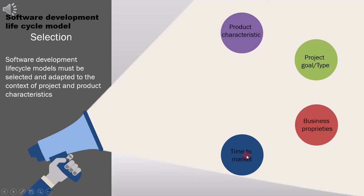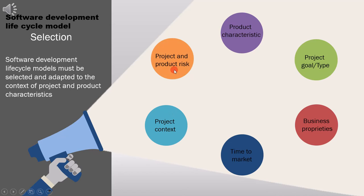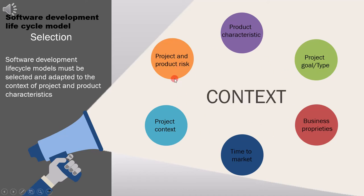If you want to release the product early, you can go for the Agile model, since it's a very fast process. Project context — just like the product characteristics or goal — will also affect your choice of a development model. And finally, you have project and product risk. This is a very important factor. What is the risk associated with your product — is it safety-related or security-related? This consideration will also have to be kept in mind when selecting a model.